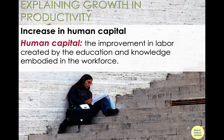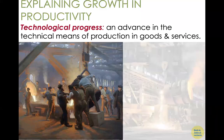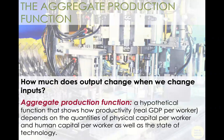The third factor is technological progress — advances in the way we produce. Think about electricity, the internet, and computers — these are major technological advances that have fundamentally changed how we live, how we work, and how we produce. So we have now identified three important factors: physical capital, human capital, and technological progress.